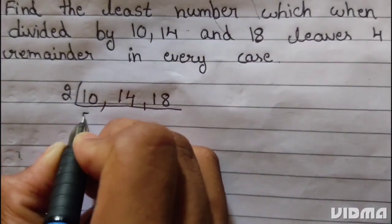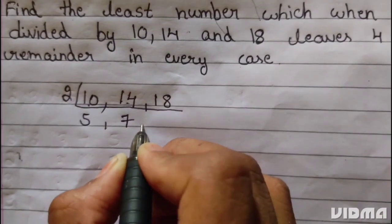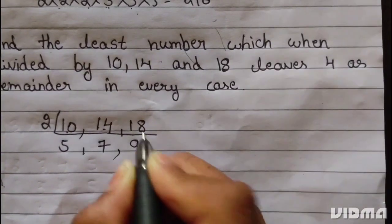2 divides into 10 gives 5, 2 into 14 gives 7, 2 into 18 gives 9.